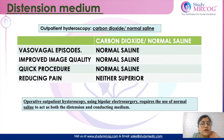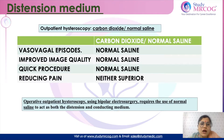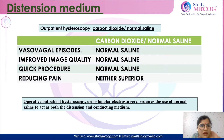For outpatient hysteroscopy, the two important distension media which are used are carbon dioxide and normal saline. Normal saline is better than carbon dioxide in terms that it decreases vasovagal episodes, it improves the image quality, and the procedure is quicker.